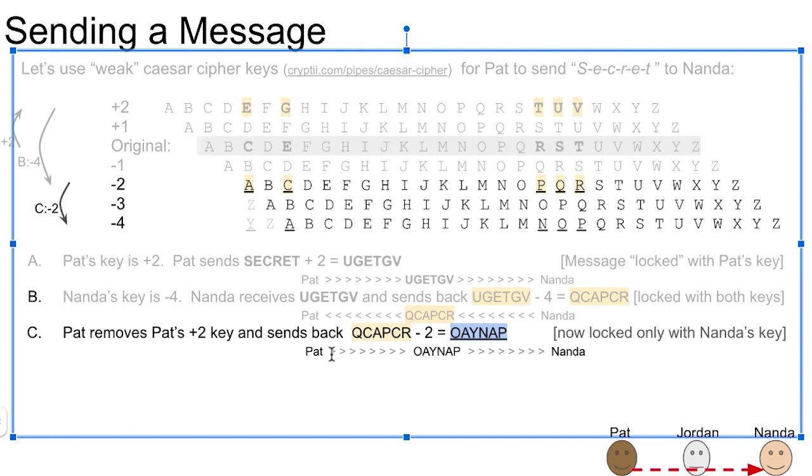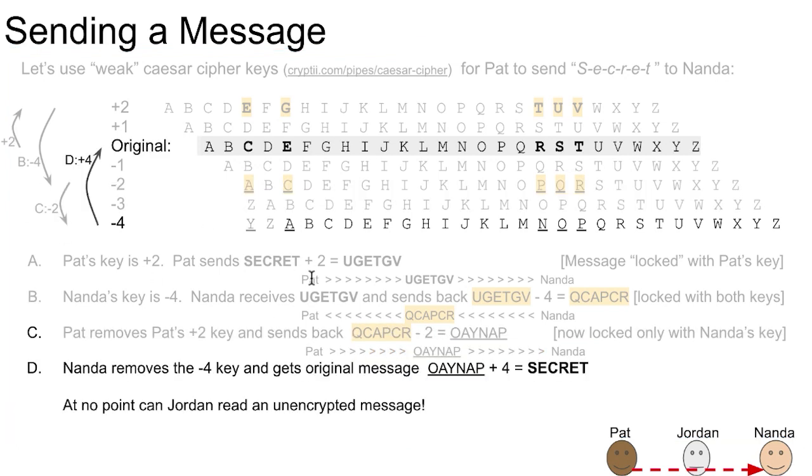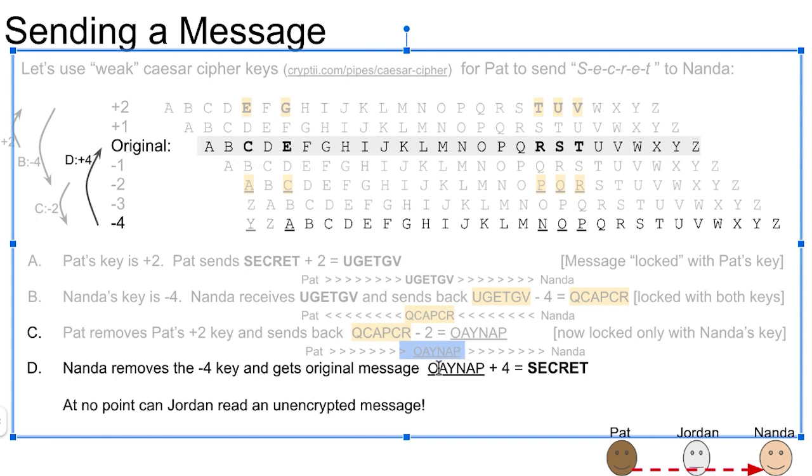And now Pat sends O-I-NAP back to Nanda. So now this is Pat has removed Pat's lock on there. And now Nanda receives this message, and it's only locked with Nanda's. So when Nanda gets this, Nanda's, remember, original minus four key. It means if we want to remove the minus four, we have to reverse it into a plus four. So Nanda receives O-I-NAP, and so we take O-I-NAP, and we do a plus four.